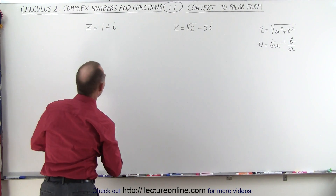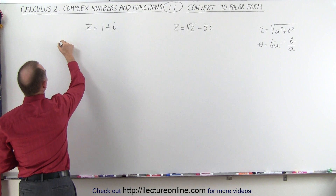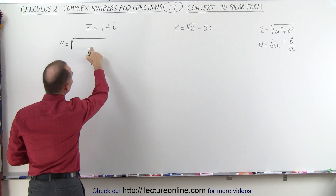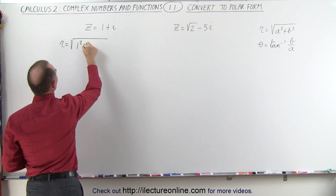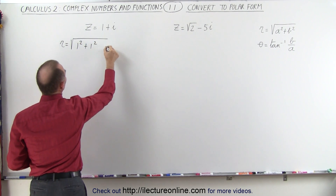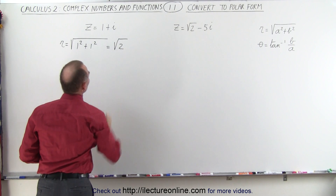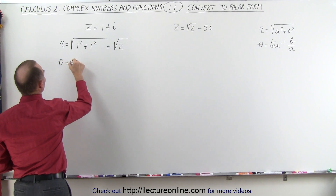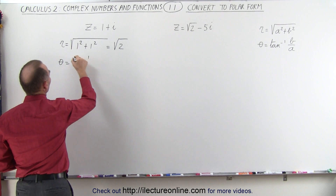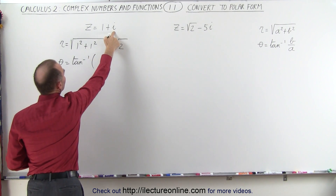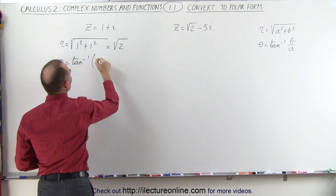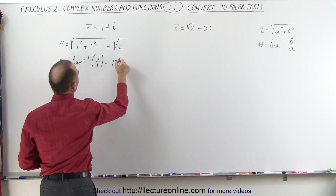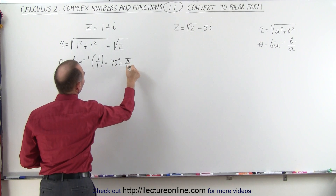For the first example, r is equal to the square root of a squared plus b squared, which is 1 squared plus 1 squared, and therefore that's equal to the square root of 2. To find the angle, theta is equal to the arctangent of b over a. b would be 1 and a is 1, so it'll be 1 over 1, which is equal to 45 degrees, which is equal to pi divided by 4.